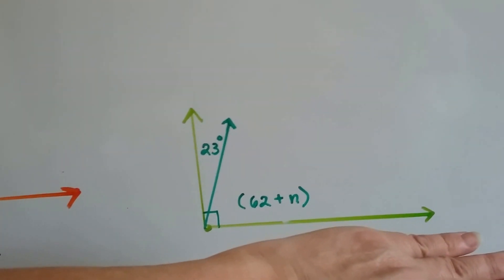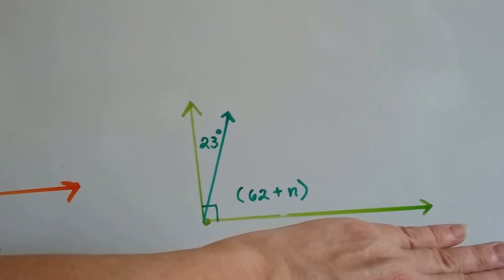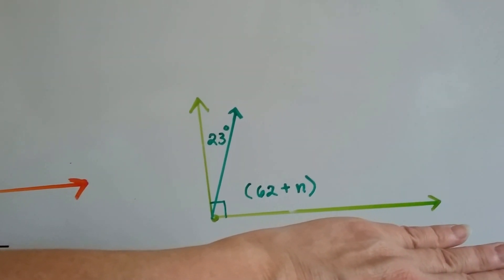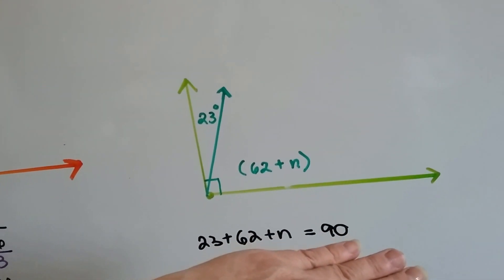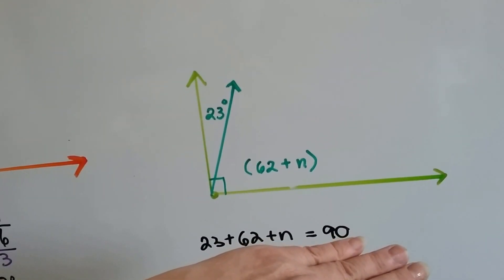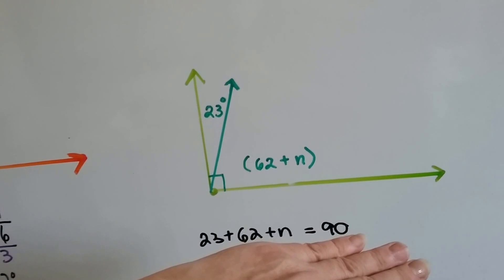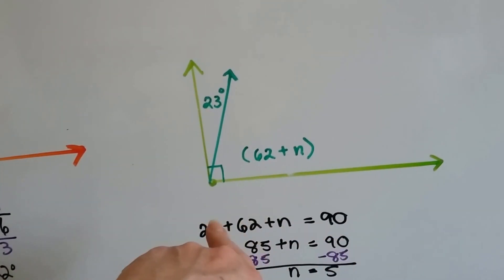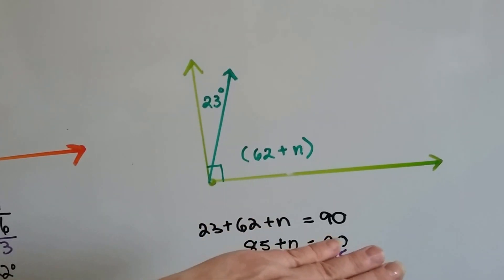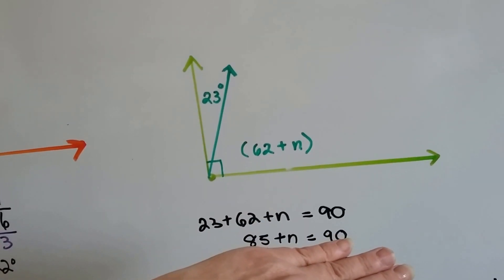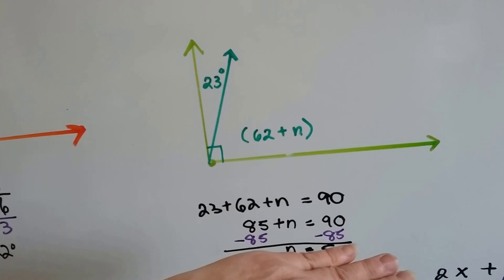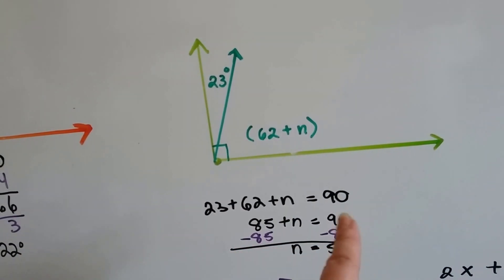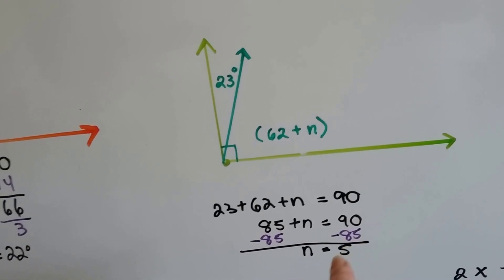So now we've got a 23 degree angle and a 62 plus n angle. And we know it's a 90 degree angle, so what we have for an equation is 23 plus 62 plus n equals 90. So we add these two, 23 and 62, and get 85 plus n equals 90. And we subtract 85 from each side, and we end up with n is equal to 5, because 90 minus 85 is 5.